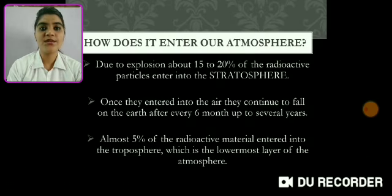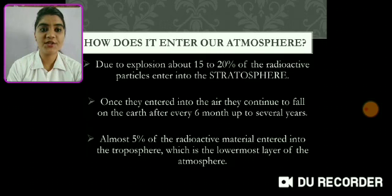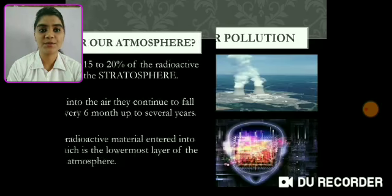So how does it enter our atmosphere? Due to explosion, about 15-20% of radioactive particles enter into the stratosphere. Once they enter the air, they continue to fall on the earth after every sixth month up to several years. Almost 5% of the radioactive material enters into the troposphere, which is the lowermost layer of the atmosphere.